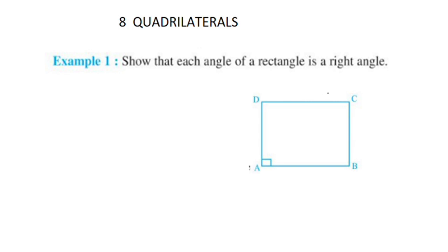A rectangle is a parallelogram in which one angle is a right angle, that is, a 90 degree angle. If you say ABCD, this rectangle is also a parallelogram.